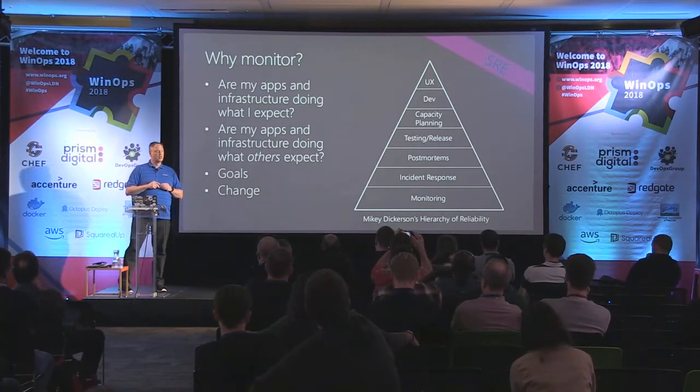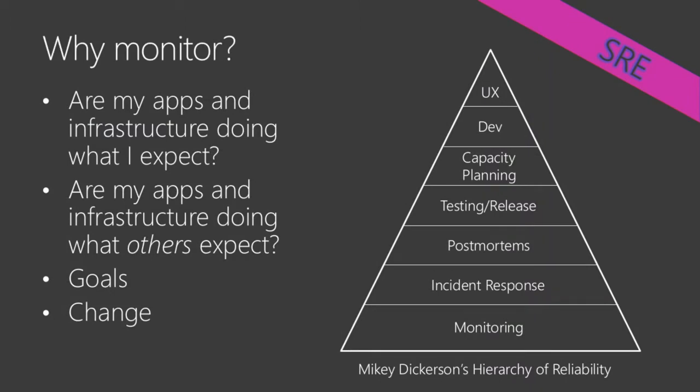We have a hierarchy of reliability, similar to a hierarchy of needs. As we focus on building reliable systems, monitoring is what we base everything on. In the site reliability space, we start and talk about monitoring as our foundational capability. Our ability to respond to incidents, do post-mortems, add new tests, do capacity planning, new development, and user experience — all of those things depend on our ability to get data out of our systems about how they are running.